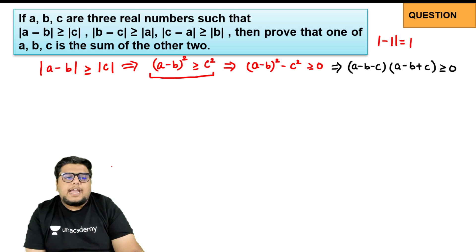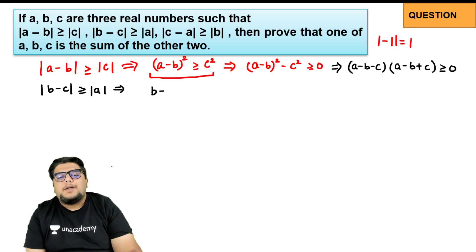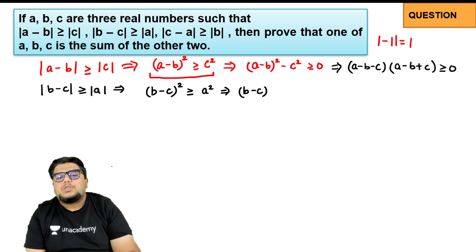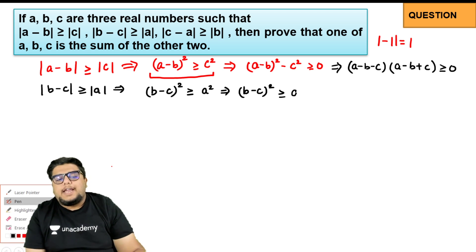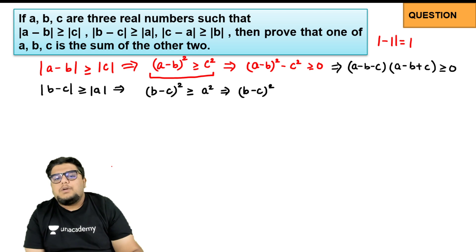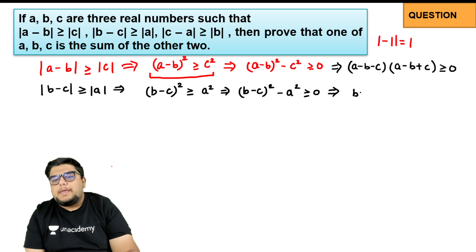The second condition is mod of (b minus c) greater than or equal to mod a. Squaring both sides gives (b minus c) whole square greater than or equal to a squared. Taking a squared to the other side and factoring the same way, I get (b minus c minus a) times (b minus c plus a) greater than or equal to zero.